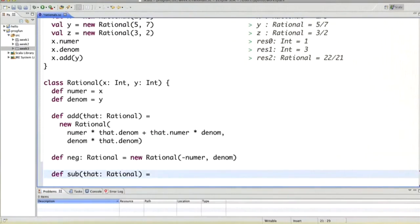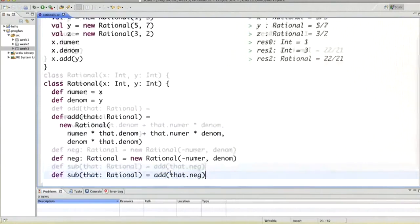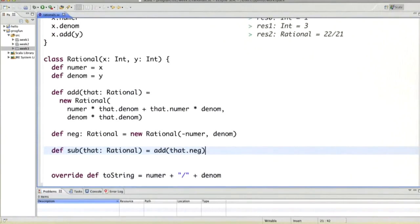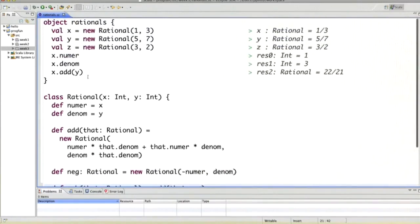But a more elegant way would be to say we add the parameter negated. So what's the advantage of doing it this way is that we do not repeat ourselves. We do not have to write this complicated formula twice. So that's usually called the DRY principle: don't repeat yourself. And it's a very good guideline for software development, whether it's functional or not.